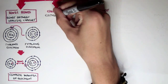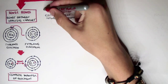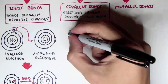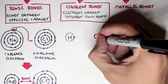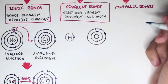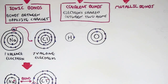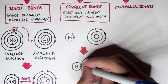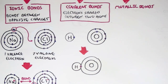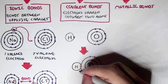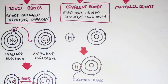Next we have covalent bonds, which can be described as electrons being shared between two atoms. For example, hydrogen has one valence electron and oxygen has six. Hydrogen needs one more electron to become stable, and oxygen needs two more. Hydrogen's electron is shared with oxygen, and oxygen's electron is shared with hydrogen. This bond is not as strong as ionic bonds.